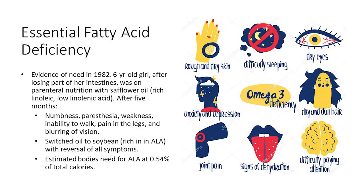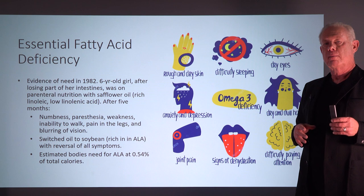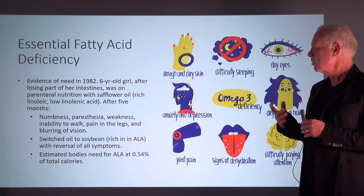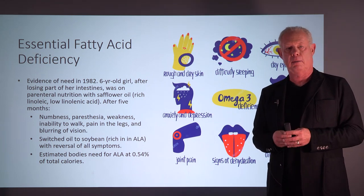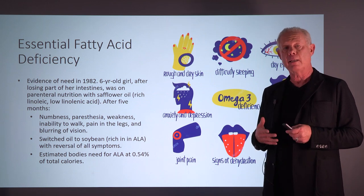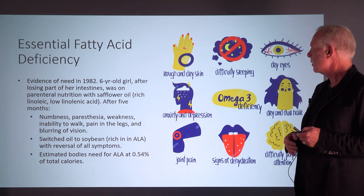We also learned in 1982 from a six-year-old girl who had been shot, lost part of her intestines, and was put on IV feeding — supposedly giving her everything she needed. Within a few months, she developed numbness, paresthesias, weakness, inability to walk, leg pain, and blurring of vision. They switched her diet to a soy base rich in ALA, and within days all her symptoms were gone. This showed that ALA is essential in the diet — an essential fatty acid — and we started learning about its importance at that point.